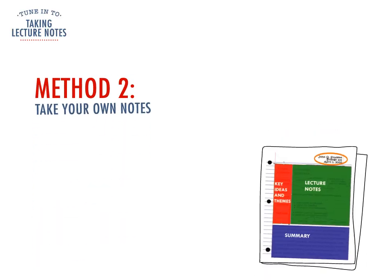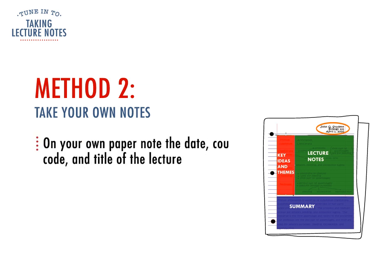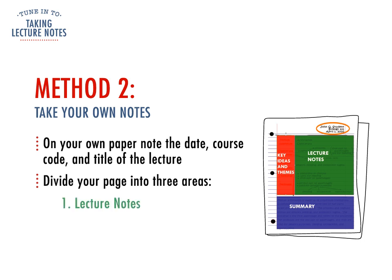Another method is to take notes on your own paper. It's a good idea to put the date, course code and title of the lecture at the top of the page. Next, split your page into three sections as shown in this example. The right-hand column is used for notes you will take during the lecture. During the lecture, take short, sharp notes, organising information under headings with dot points. Highlight important information and circle things you are unsure of.